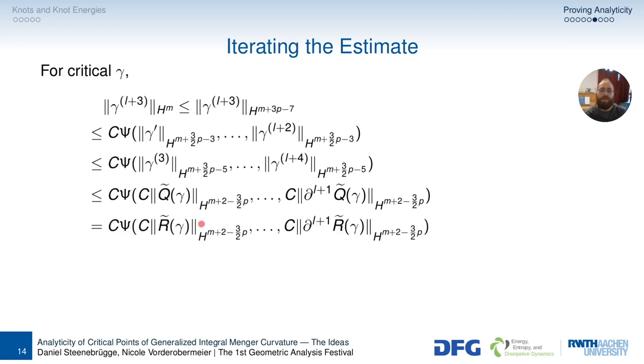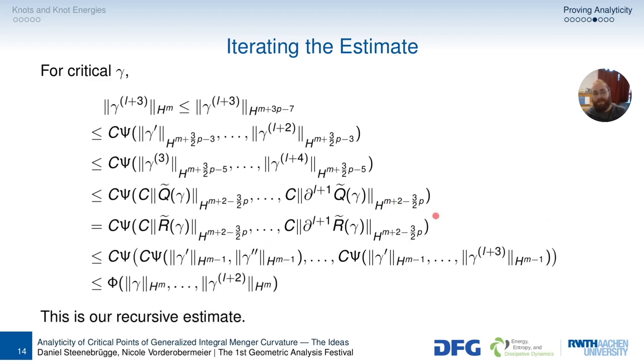Now we know that we can bound gamma L plus 3 above the main term, but then we need gamma L plus 3. So, we cheat here and shift two derivatives from the Sobolev norm into the argument of the Sobolev norm. And then we know that these things are bounded by the main term, by the norms of the main term. Well, some other norms, because we have this shift thingy going on. And of course, we know that this is the same as the remainder term, because we have critical gamma. And we already know how to bound the remainder term. And so we get this nested estimate, depending on gamma prime up to gamma L plus 3. And then you might say, well, okay, we went from L plus 3 to L plus 3. That's a lot of work for nothing. But the important part is here. We go from HM to HM minus 1. So we actually gain a derivative, a whole derivative. This is very important. And let's, this is very long. Let's just call that phi. And this is our recursive estimate. Very nice.